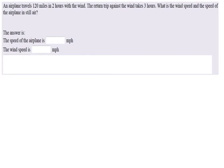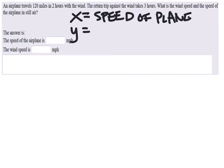We have an airplane traveling 120 miles in two hours with the wind. The return trip against the wind takes three hours. What is the wind speed and speed of the plane in still air? Those are the two things we need. We generally just use X and Y. I'm going to say X is the speed of the plane, and this is the wind speed.